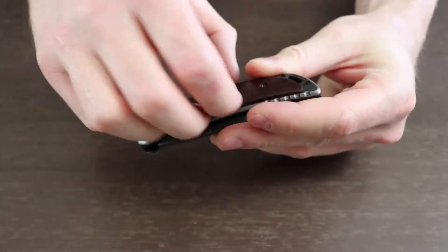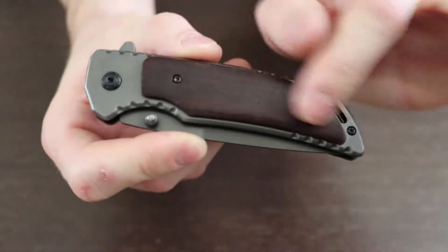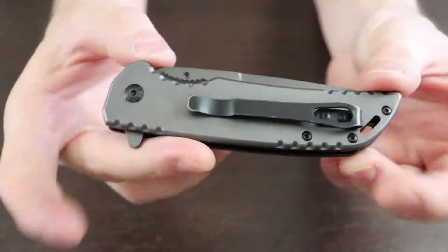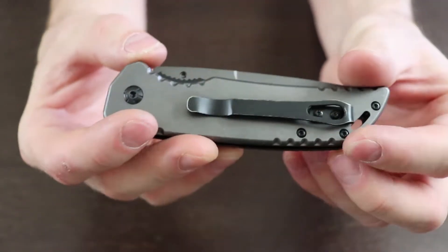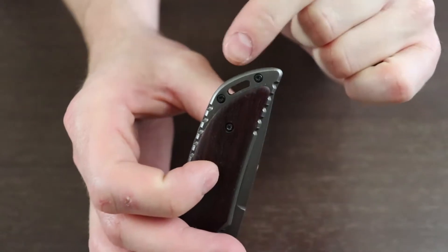You've got your wood handle, well that's about the only wood that's going to be on this knife. Everything else is going to be stainless steel, I guess where the weight comes from. Right there you've got your lanyard hole.